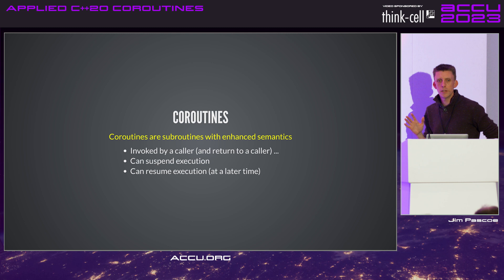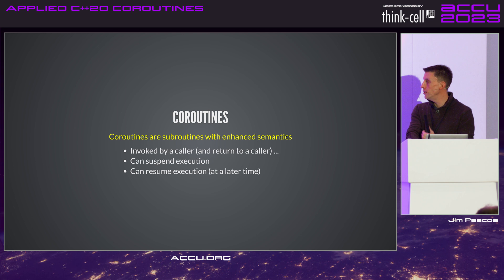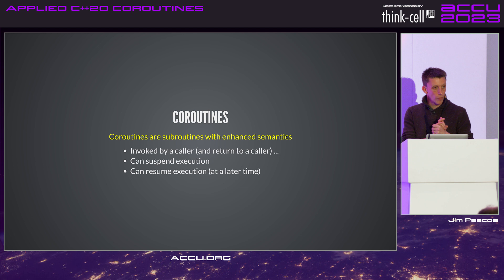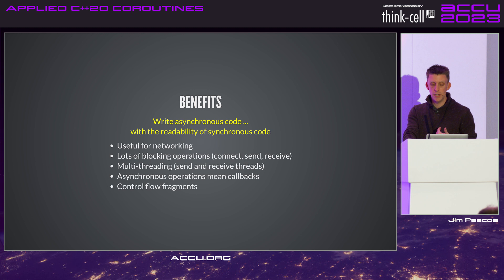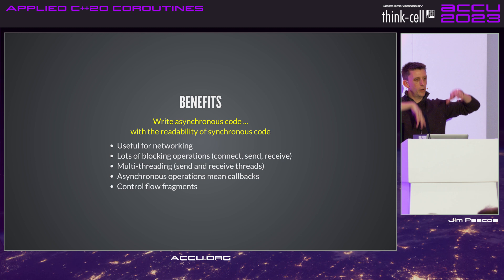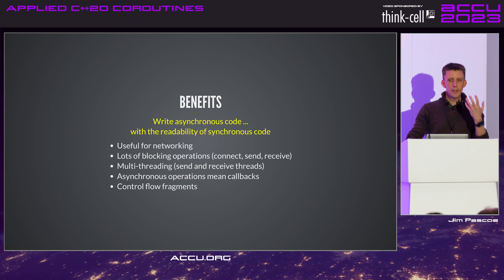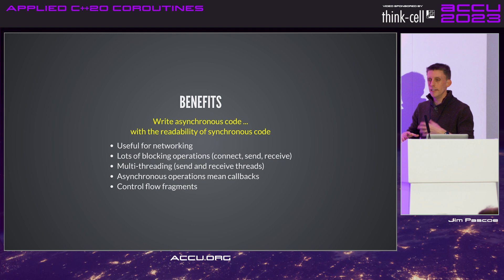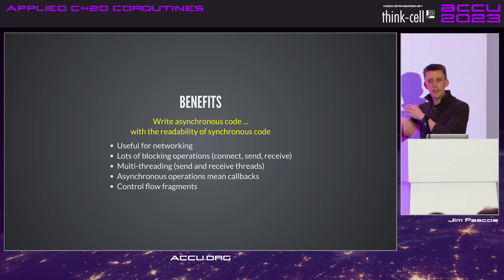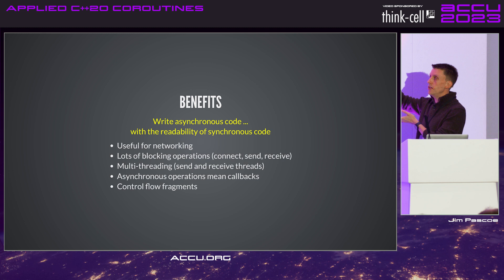Coroutines are invoked by a caller, return to a caller, and — the key thing — you can suspend execution and come back at a later time. That's really what the co_await mechanism gives you. The main benefit is it allows us to write asynchronous code. The callback-heavy connector.cpp I showed earlier is very complex — it gets very difficult to follow control flow, and that was just a small example. In larger systems and servers it gets far more complex. Coroutines allow us to write asynchronous code with the readability of synchronous code.